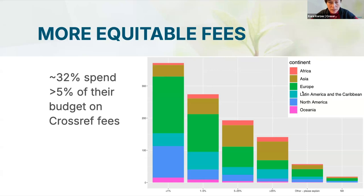Across the continents in the graph, you can see the proportion of members from Asia and to an extent also from Africa is larger in the sections showing the higher proportion of fees being paid to Crossref relative to organizational budget. However, European, North American, and Latin American and Caribbean organizations are still present there. This is something we need to address across all geographic regions — but it is important to note that some regions, especially Asia, may be more affected, and approximately 50% of our members are currently based in that region.